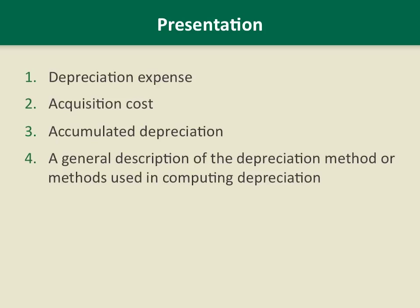Number two: acquisition cost. Number three: accumulated depreciation. Number four: the depreciation method that you use to calculate those depreciation expenses or natural resources depletion expenses.